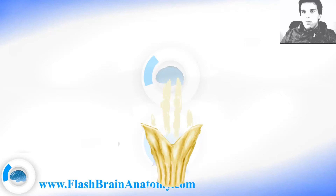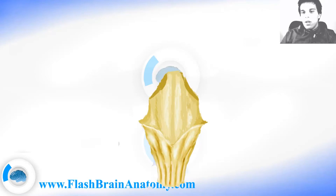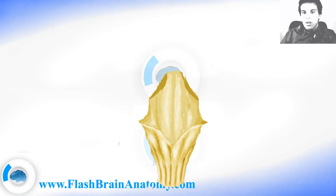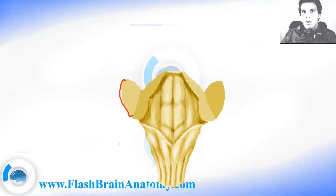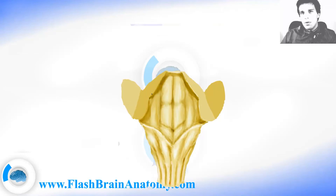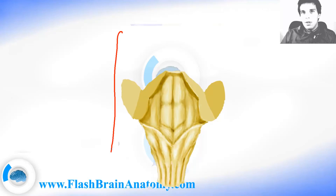I will now illustrate the fourth ventricle and the rhomboid fossa. This space over here is the fourth ventricle — it's a part of the ventricular system. There are also cerebellar peduncles, which are simply bundles of nerve fibers that leave and enter the cerebellum. This is the middle cerebellar peduncle, this is the superior one, and this is the inferior one. They also create the borders of the fourth ventricle. I have created many videos about the fourth ventricle — check out flashbrainanatomy.com.